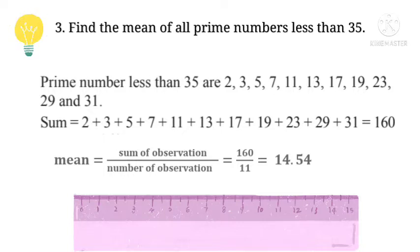Question 3: Find the mean of all prime numbers less than 35. Prime numbers less than 35 are 2, 3, 5, 7, 11, 13, 17, 19, 23, 29, and 31. These are the prime numbers.